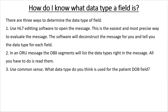How do I know what data type a field is? There are three ways to determine the data type of a field. One, you can use HL7 editing software to open the message — this is the easiest and most precise way. The software will deconstruct the message and tell you the data type for each field. Two, in an ORU message, the OBX segments will list the data types right in the message — all you have to do is read them. And thirdly, you can just use common sense. What data type do you think would be used for the patient's date of birth field? Hopefully you recognize that that would be NM.